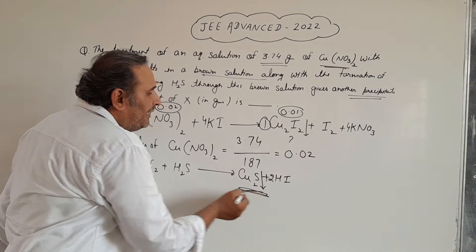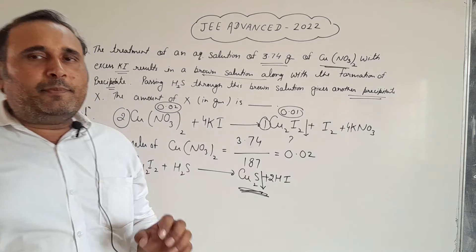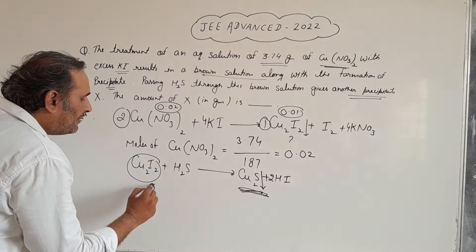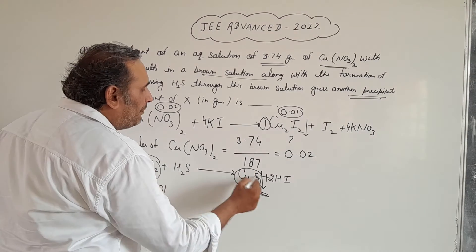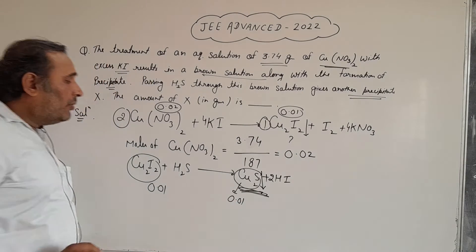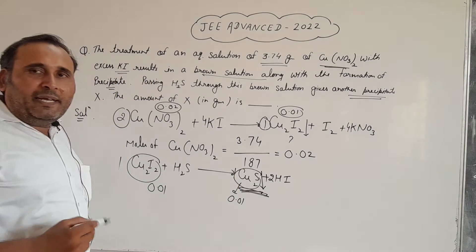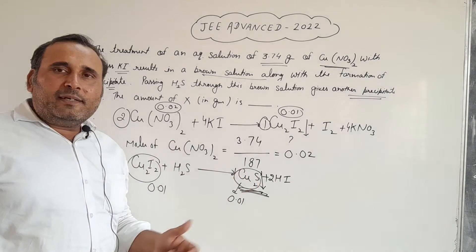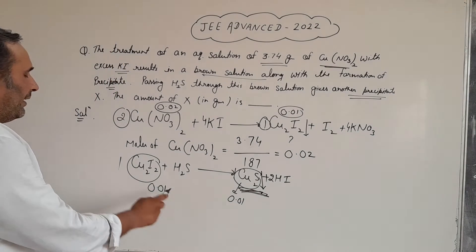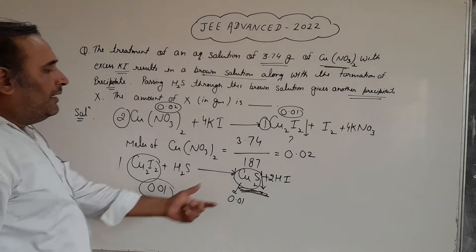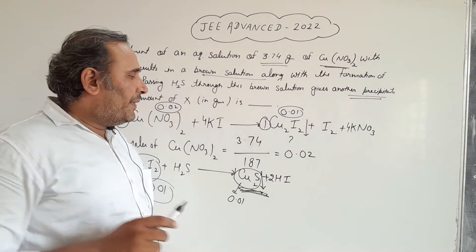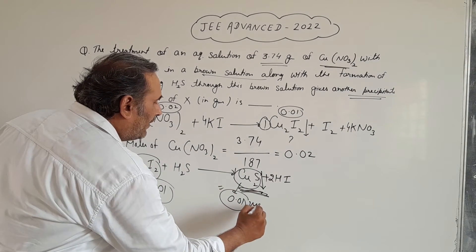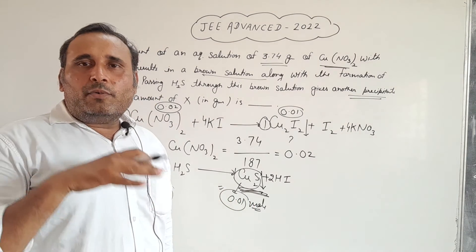Cu₂S is our second precipitate, and we have to find out the mass of Cu₂S. Since we are taking 0.01 moles of Cu₂I₂, Cu₂S will also produce 0.01 moles. The molar ratio in the balanced equation is 1:1, meaning when we take 1 mole of Cu₂I₂ we get 1 mole of Cu₂S. So we will get 0.01 moles of Cu₂S. But we have not found the mass yet — we have to find out the mass.